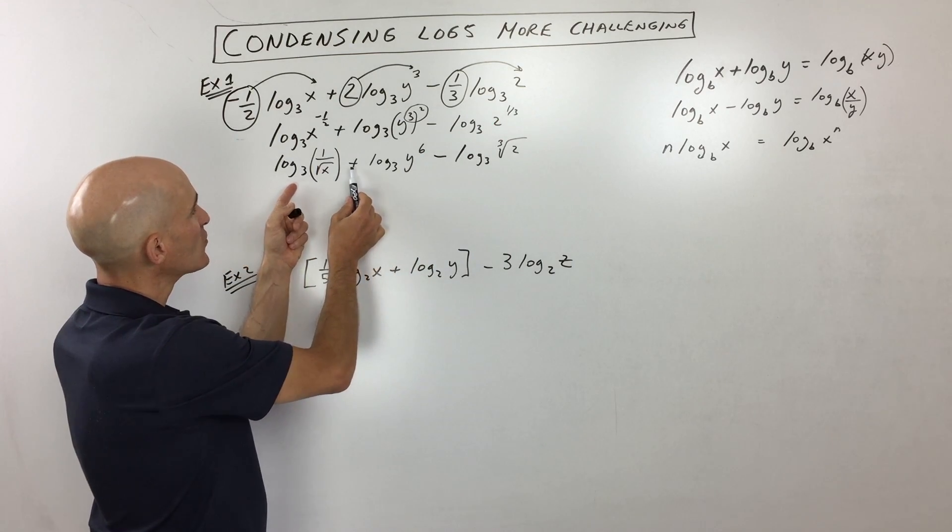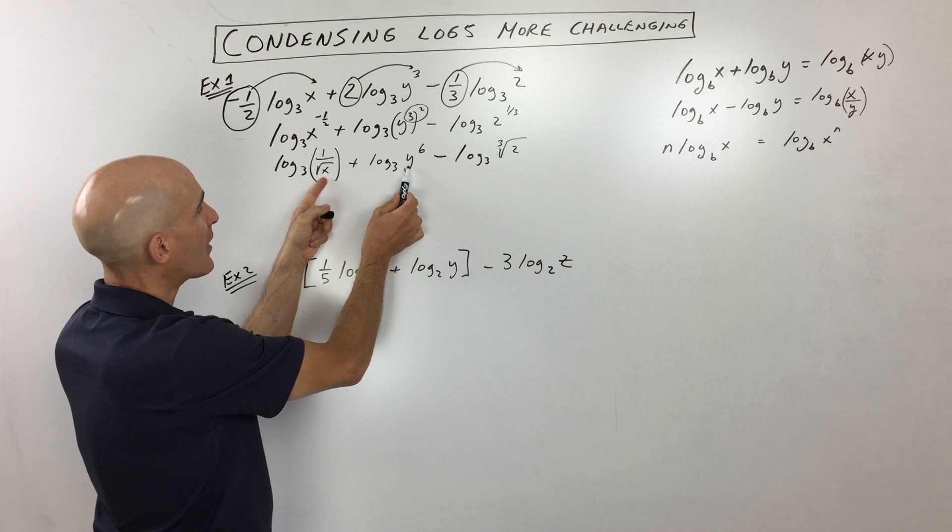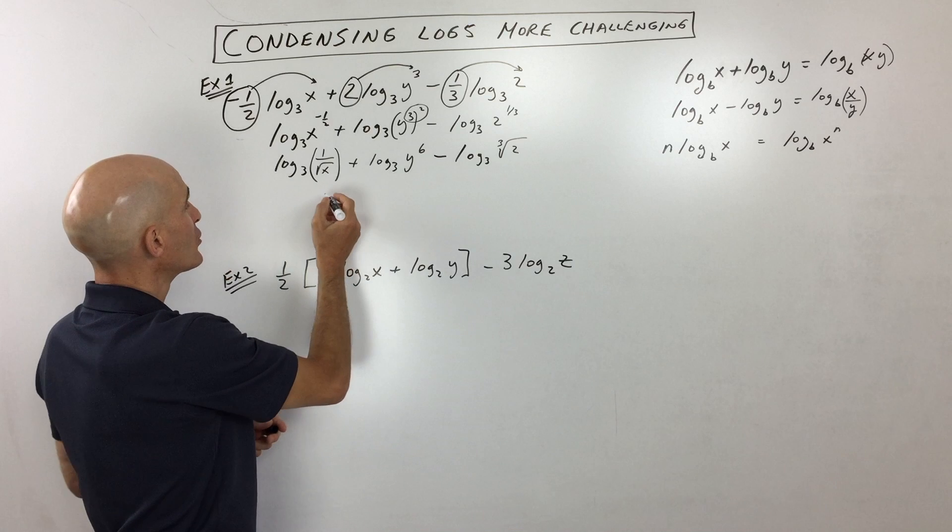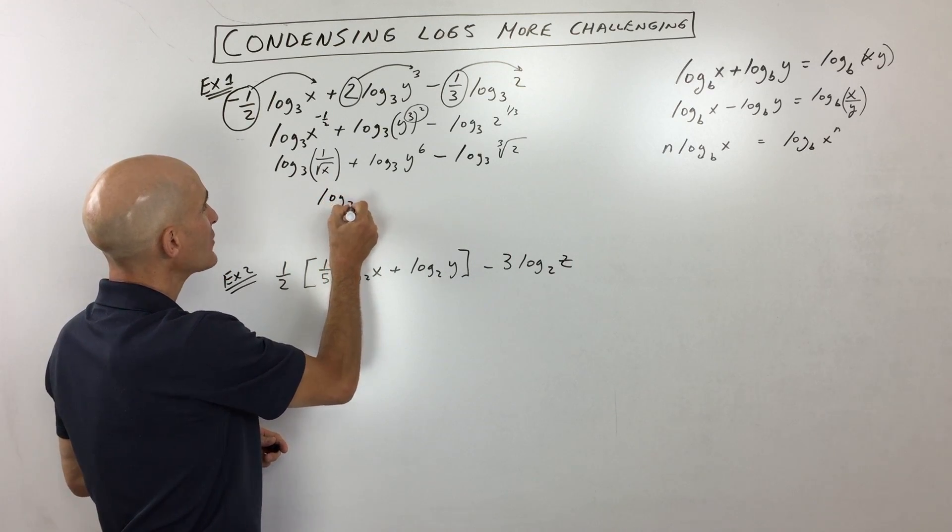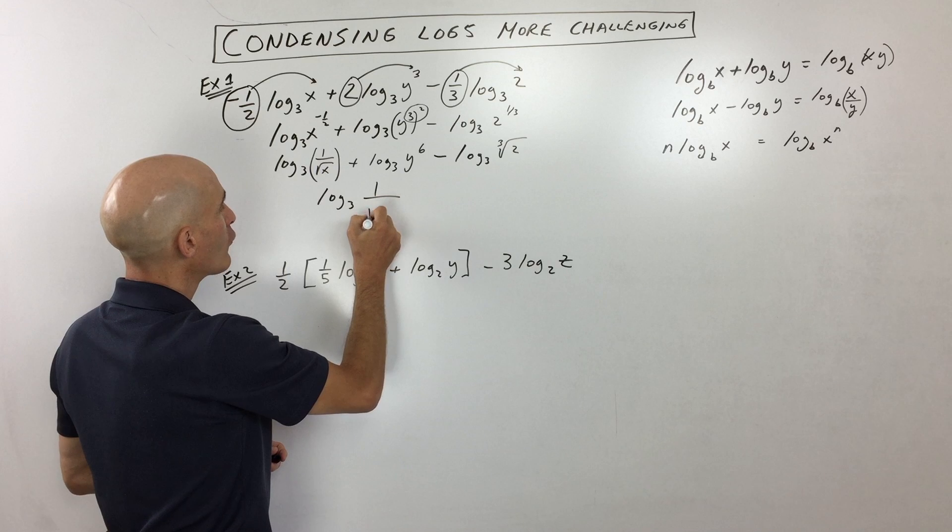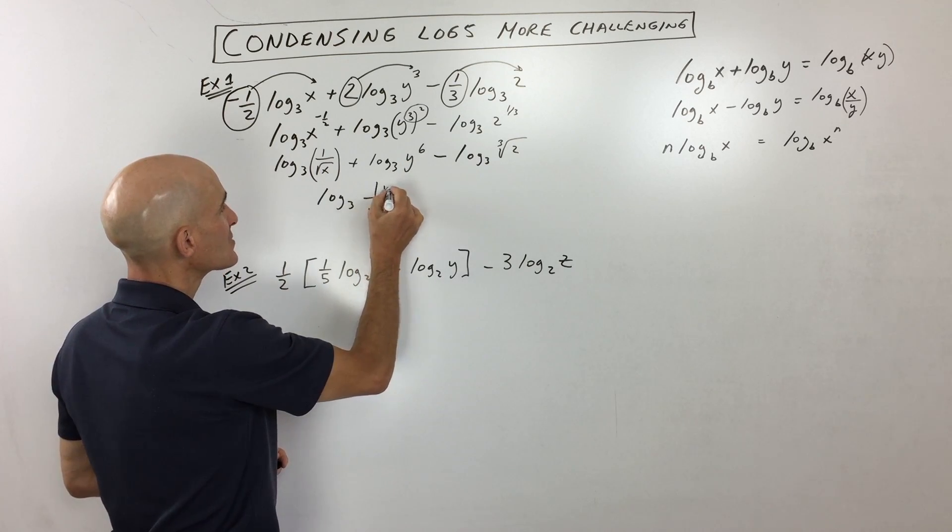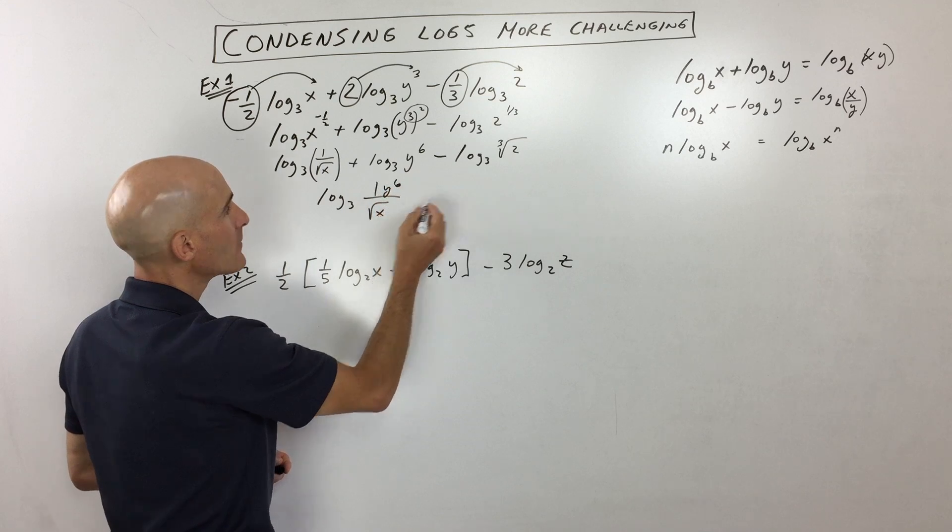And then the next step, what we're going to do is when you add, you multiply the arguments, but when you subtract, you divide. So what we're going to do is we're going to condense this all into one log now, so we've got log base 3 of 1 over the square root of x, multiply by y to the 6th, so I'm going to write y to the 6th in the numerator.